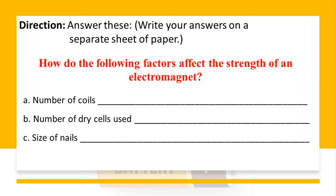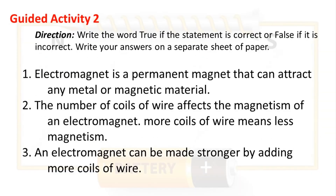Direction: Answer these. Write your answers on a separate sheet of paper. How do the following factors affect the strength of an electromagnet? A. Number of coils. B. Number of dry cells used. C. Size of nails.